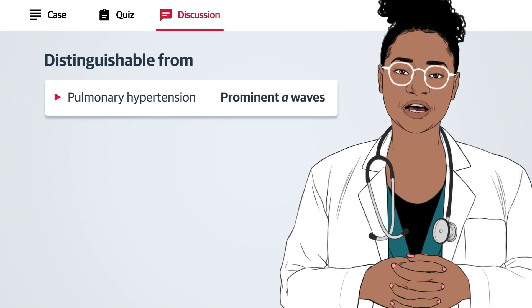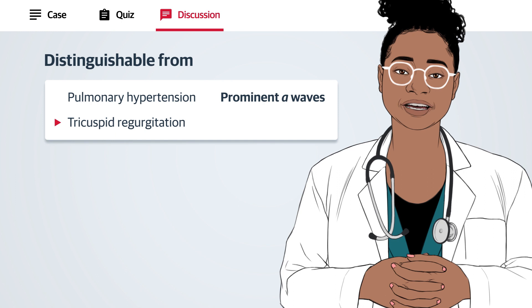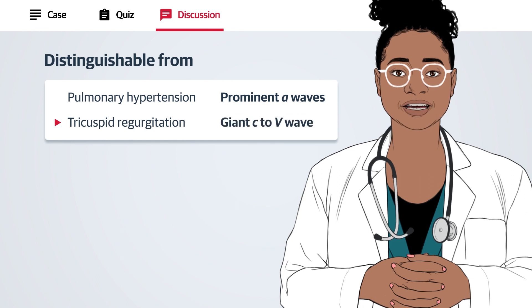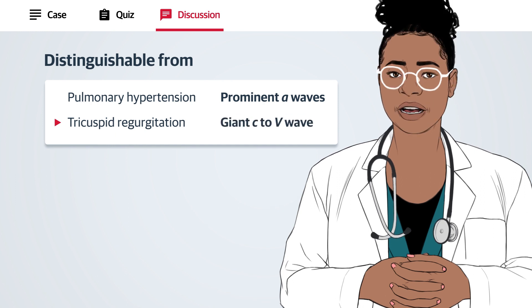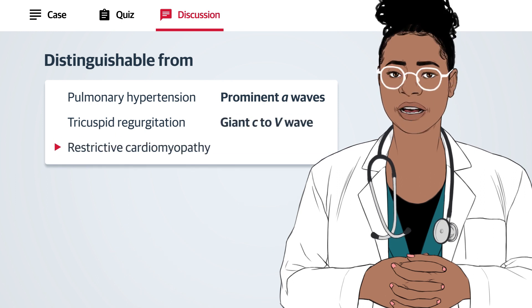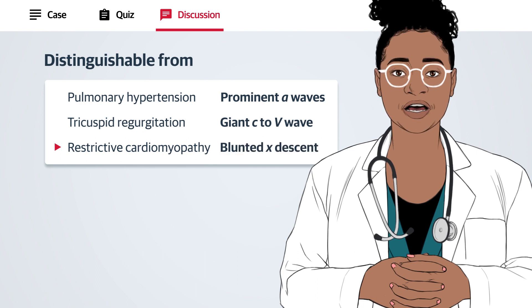characterized by prominent A-waves; tricuspid regurgitation, characterized by giant C-to-D wave; and restrictive cardiomyopathy, characterized by blunted X descent.